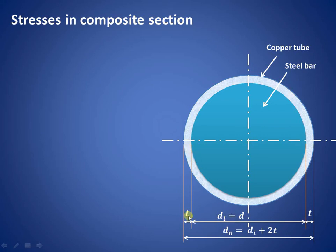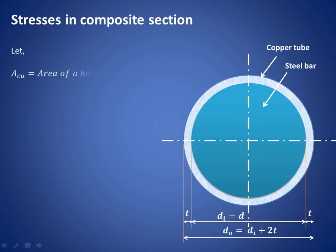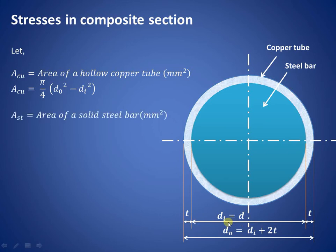The metal thickness is T. From the figure, the outer diameter DO is equal to the inside diameter DI plus 2 times the thickness T, so DO equals DI plus 2T. The area of the hollow copper tube is given by (π/4)(DO² − DI²), and the area of the solid steel bar AST is given by (π/4)D².